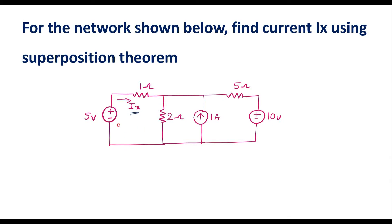Here we can see that this circuit consists of three sources. Among those, two are voltage sources — 5 volt and 10 volt — and we have one current source of magnitude 1 amp. As we know in superposition theorem, at a time we are supposed to consider one source. When we consider a single source, we make the other two sources zero. If there is a voltage source, we have to short it, and if there is a current source, we have to open it.